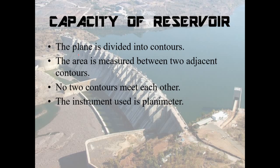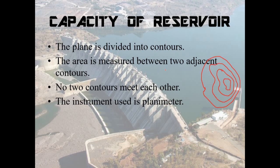Capacity of reservoir: the plane is divided into contours. Contours are nothing but the sections. If this is a piece of land, the smaller closed surfaces inside are contours. Contours differ by levelling — they may be deep or elevated. It is a projection of the land. The area is measured between two adjacent contours — that is, the area between one contour and the other is calculated.